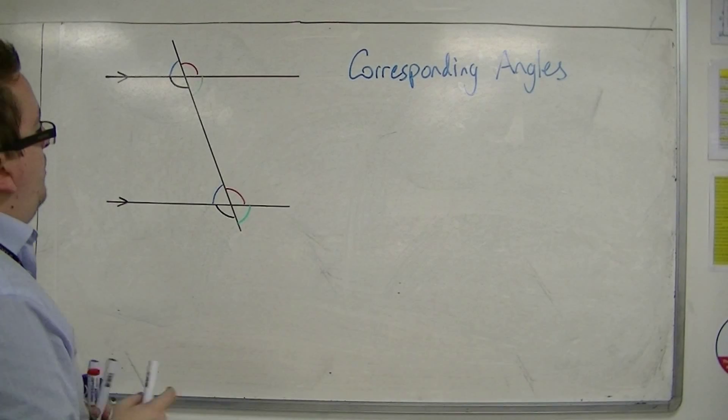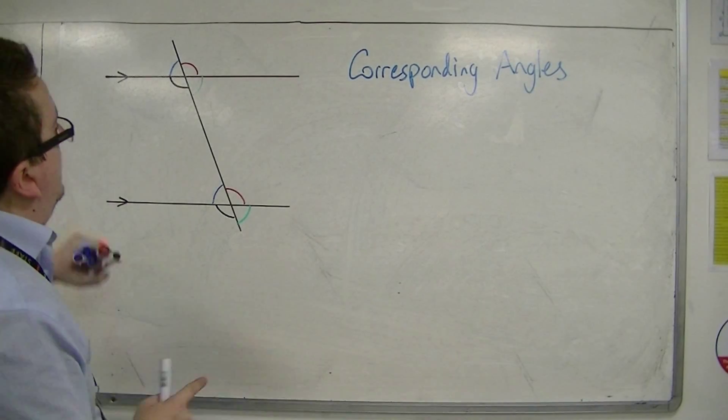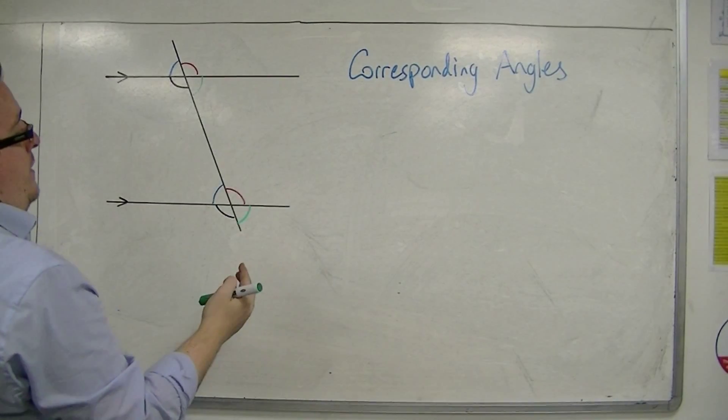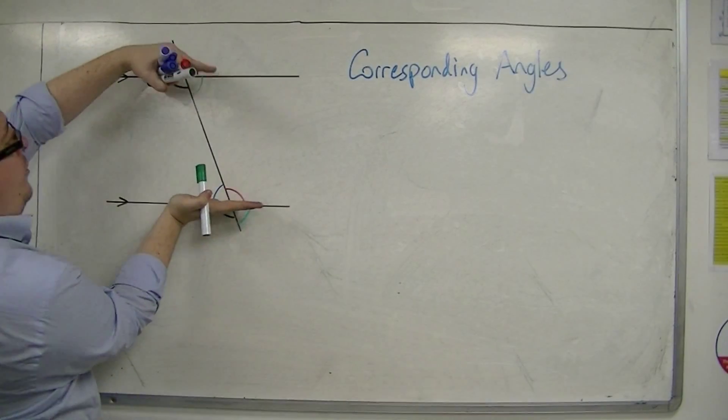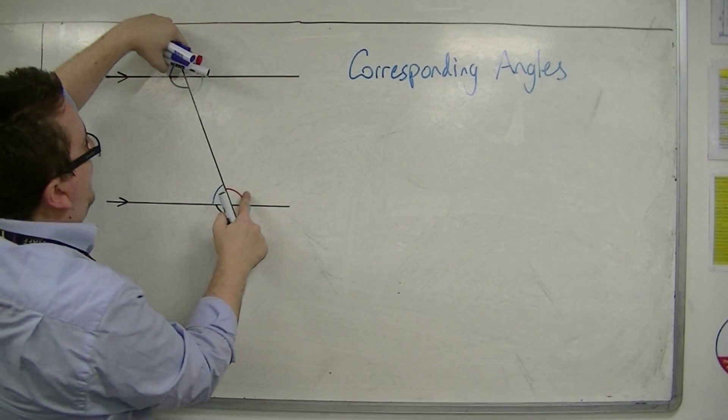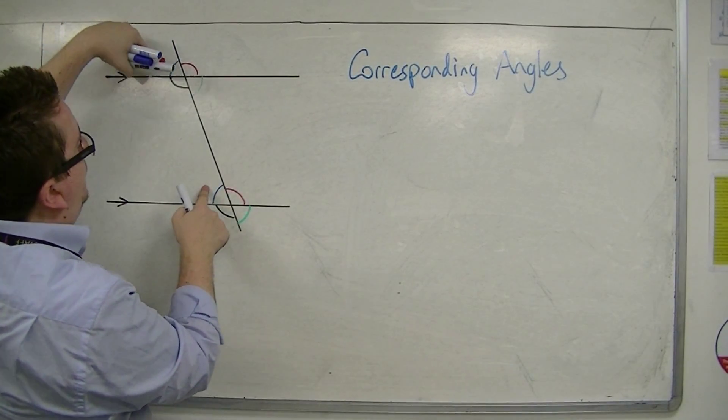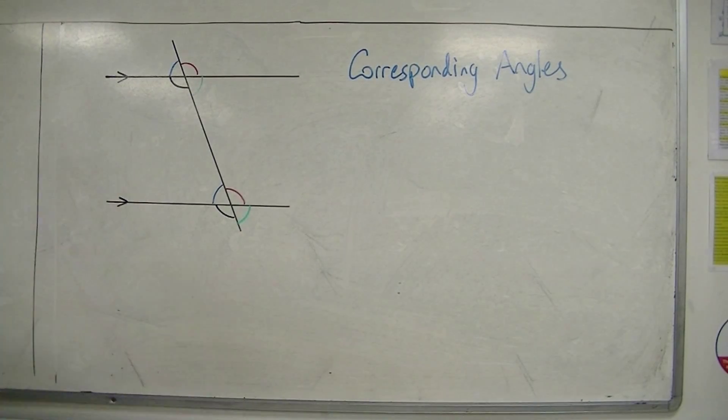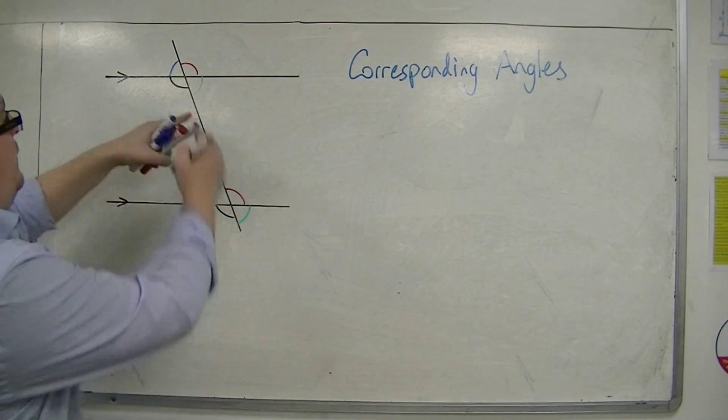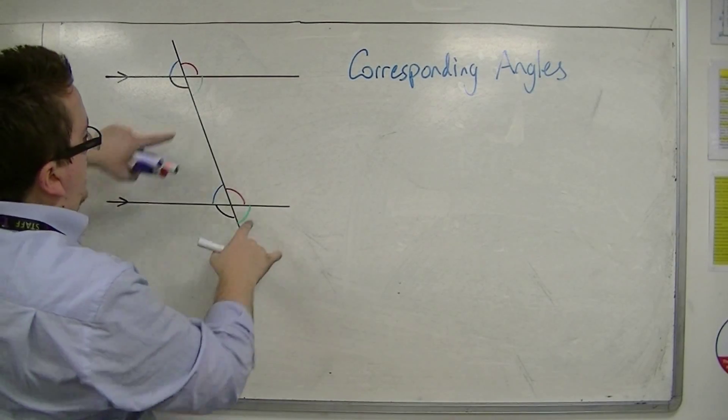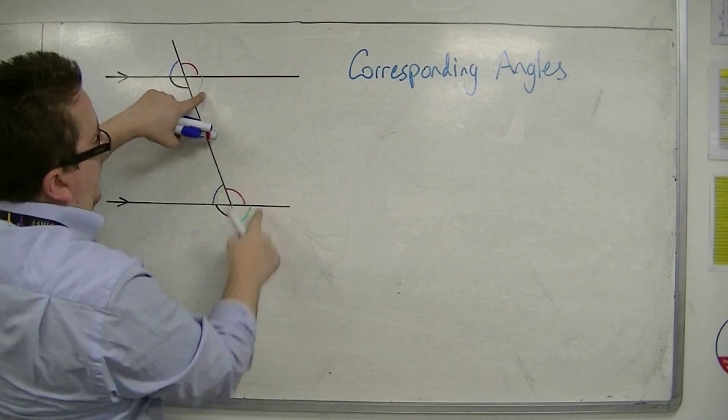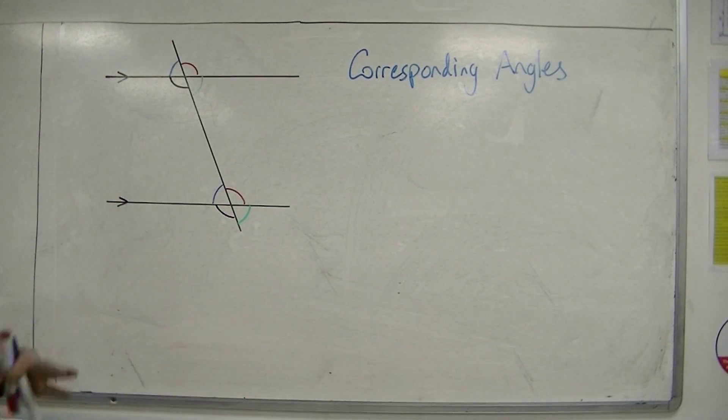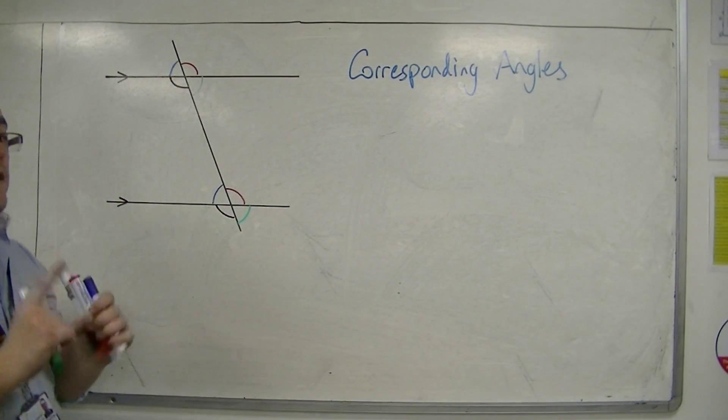So corresponding angles - the property is that one of the angles is outside the parallel lines. We'll call these angles between the parallel lines and the other ones outside. You can see that one is always outside the parallel lines, and it's always on the same side of that line. The green is on the same side as that green. The red is on the same side as the red. One inside, one outside, and equal.